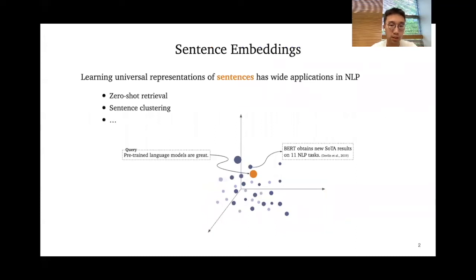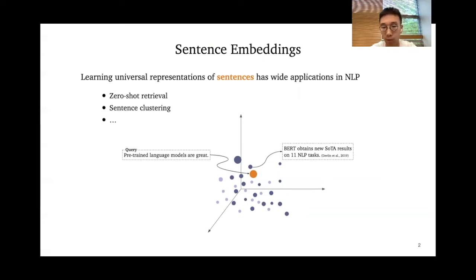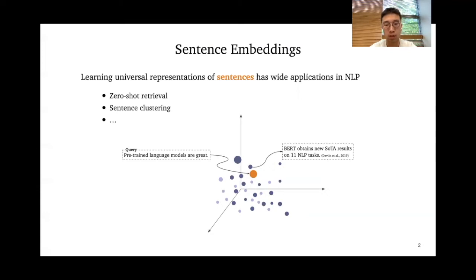Before we dive into SimCSE, let me give you some background. The problem we're trying to tackle is sentence embeddings, which provide applications like zero-shot retrieval and sentence clustering. For example, we have a database of sentences from all NLP papers, and we want to find a sentence with the closest semantic meaning to a query. Pre-trained language models are great — if we have good sentence embeddings, we can retrieve sentences like those obtaining new SOTA results on 11 NLP tasks from the BERT paper.